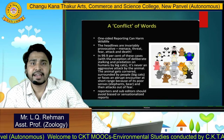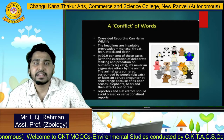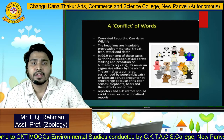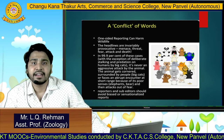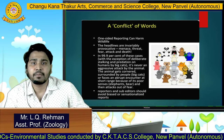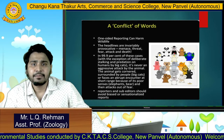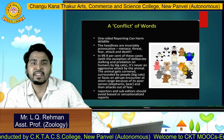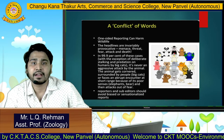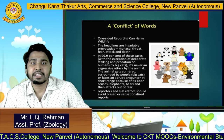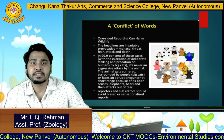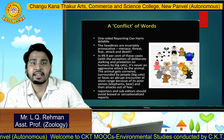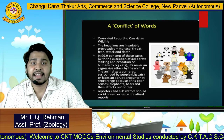In 99.9% of these cases, with the exception of deliberate stalking and predation on humans by big cats, it is never an aggressive attack by the animal. The animal gets cornered or surrounded by people, such as big cats, or faces an abrupt encounter at short range due to poor senses, such as elephants and bears, and they attack out of fear.